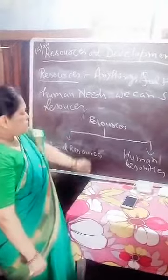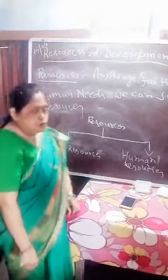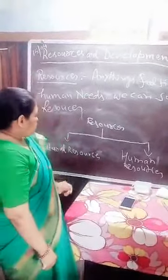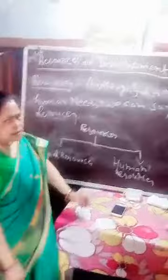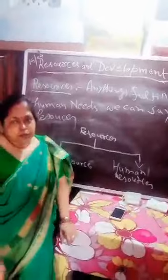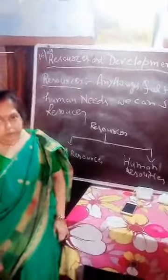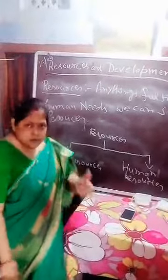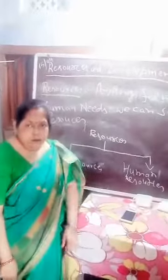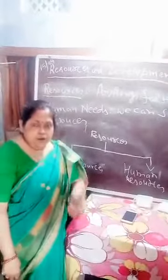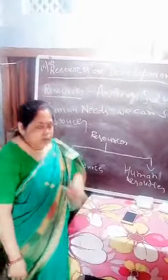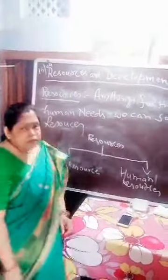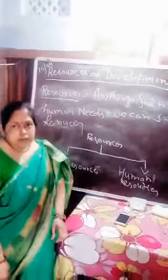Natural resources we can classify into four parts on the basis of origin, and on the basis of adjustability.